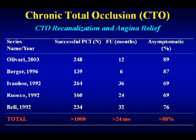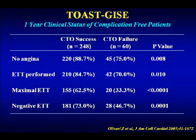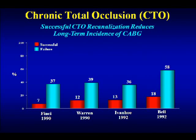Numerous studies have shown that once you open the vessel, patients become asymptomatic in over 80% of cases or their ischemia decreases in successful CTO cases. From the TOAST-GISOC trial, patients with CTO success compared to failure had less angina and better exercise capacity. Regarding need for CABG: successful CTO reduces or delays late CABG, and in that randomized trial, the 12-month need for CABG was 2.4% in successful cases versus 16% if the CTO failed.